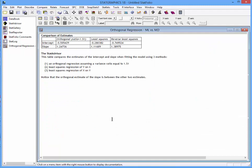If I select Comparison of Estimates, you'll see the estimated intercept and slope using orthogonal regression, using least squares, and using the reverse least squares procedure.